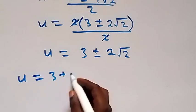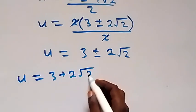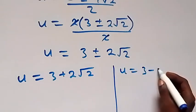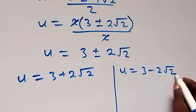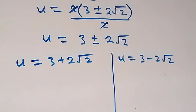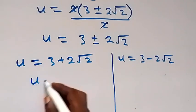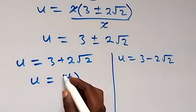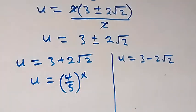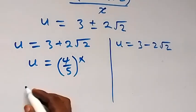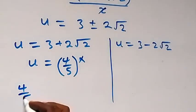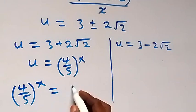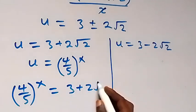Now we have 2 cases: we have u equals to 3 plus 2 root 2, and we also have u equals to 3 minus 2 root 2. Let's recall that we let u be equal to 4 over 5 raised to power x, which implies that 4 over 5 raised to power x equals to 3 plus 2 root 2.